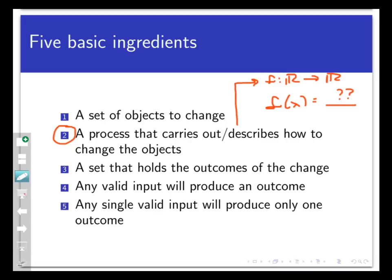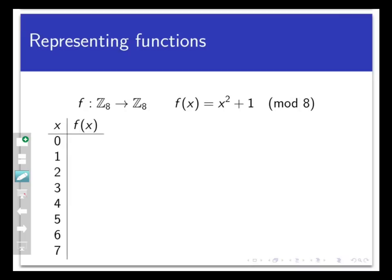Let's look at the function that maps Z8 into Z8 defined by the formula f of x equals x squared plus 1 mod 8. Now remember that Z8 is the set 0, 1, 2, 3, 4, 5, 6, 7. How does this function work?